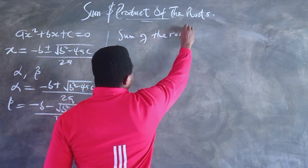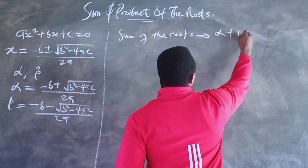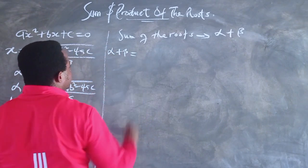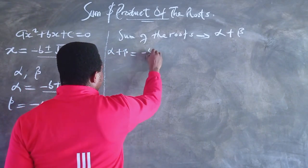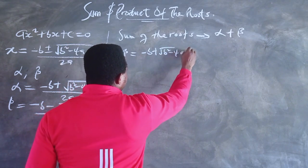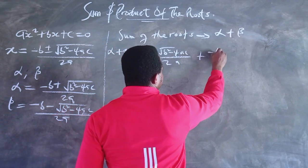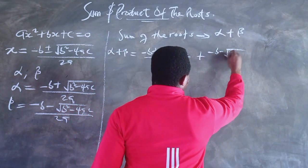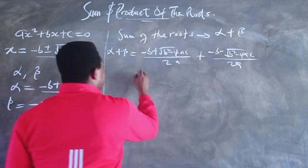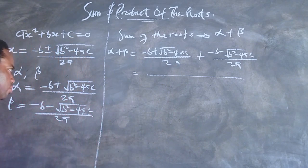Let us start with the sum of the roots. The sum of the roots means alpha plus beta, where alpha and beta are the roots of the quadratic equation. So alpha + beta = [(-b + √(b² - 4ac)) / 2a] + [(-b - √(b² - 4ac)) / 2a]. We are adding these two fractions, so the LCM is 2a.